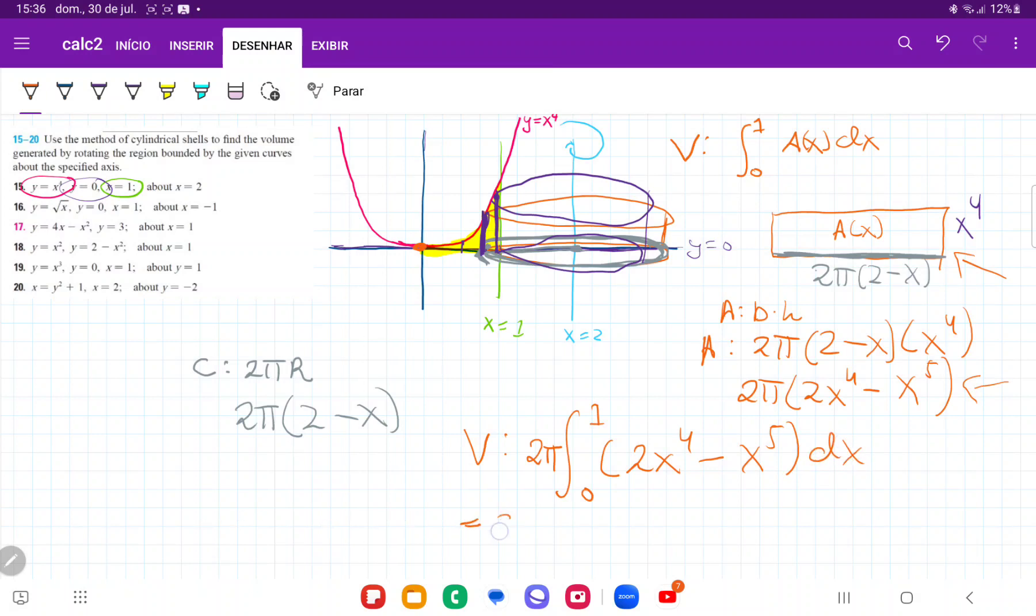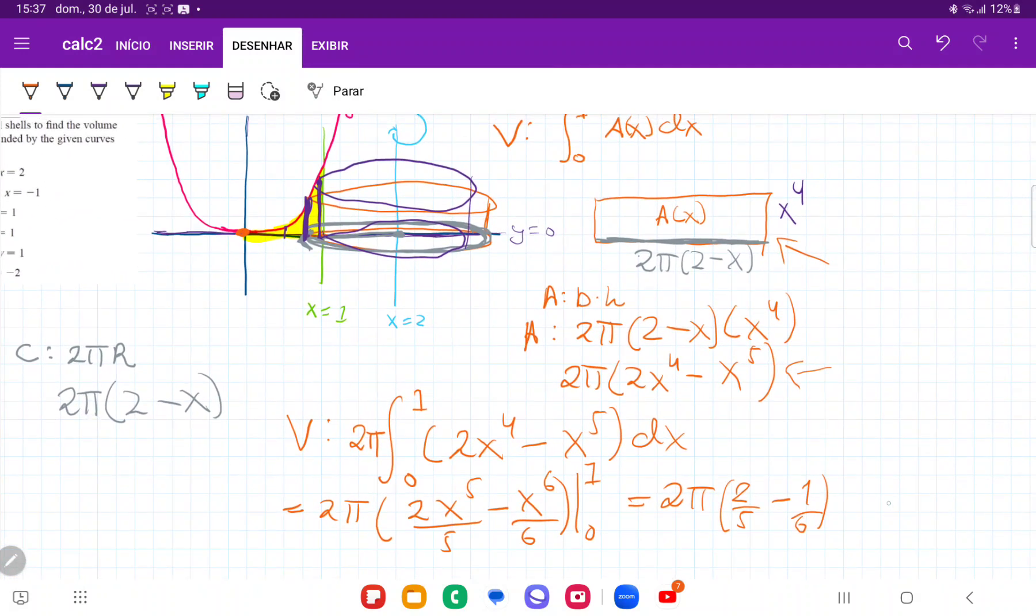So when I integrate it, this is going to give me 2 pi times, this gives me 2x to the power of 5 over 5 minus x to the power of 6 over 6 evaluated from 0 to 1. So I don't need to evaluate the lower boundary because it's just going to go to 0 and this gives me 2 pi times 2 fifths minus 1 sixth. So when I put this in my calculator, my volume is going to be 7 pi over 15.